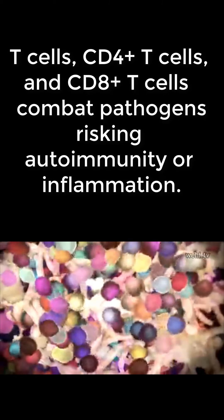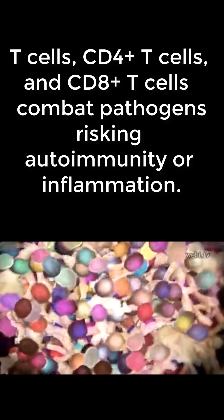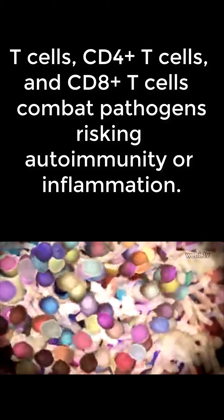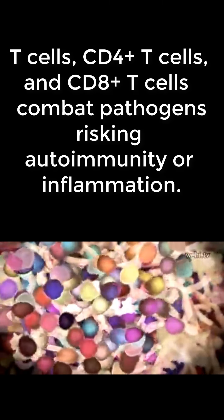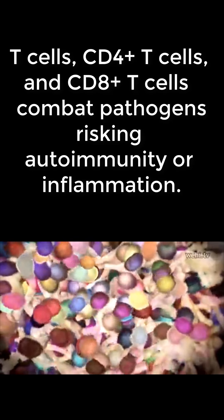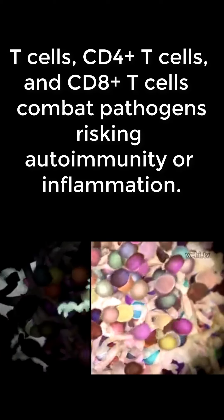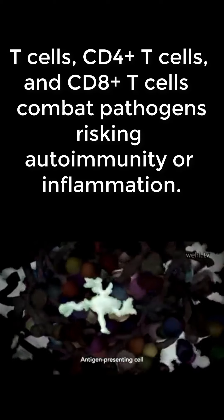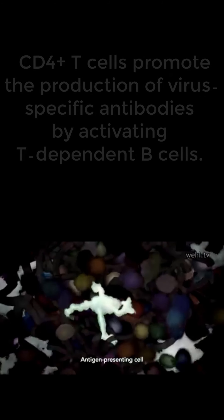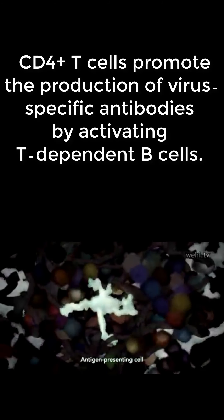The body creates millions of variant T-cells, each with the unique ability to recognize different pathogens. But T-cells cannot recognize pathogens on their own. They first encounter the pathogen via another immune cell called an antigen-presenting cell.